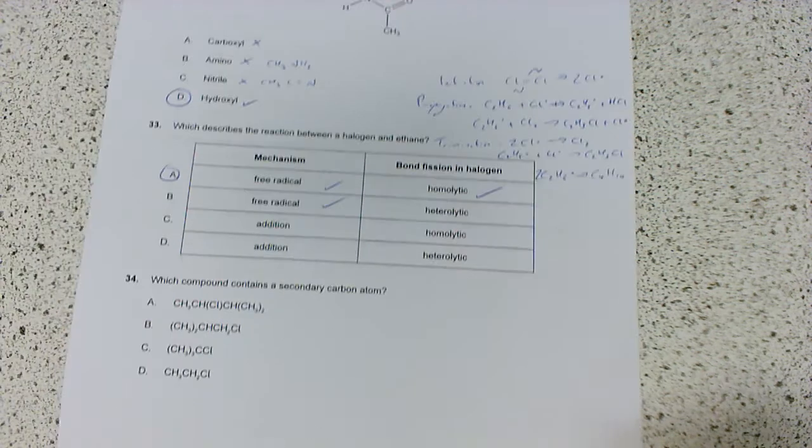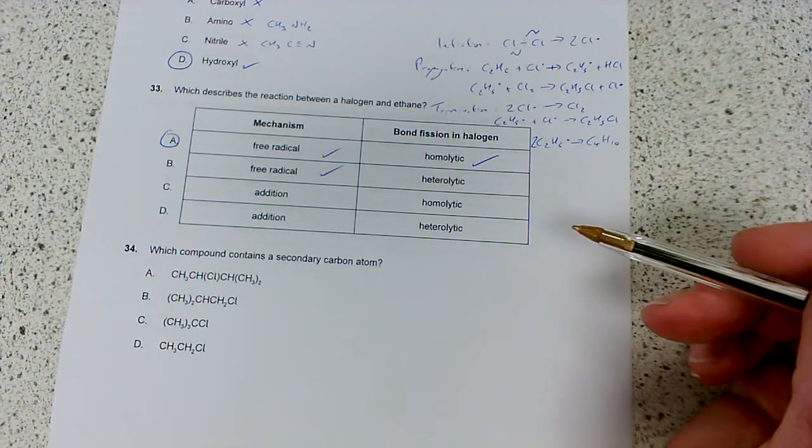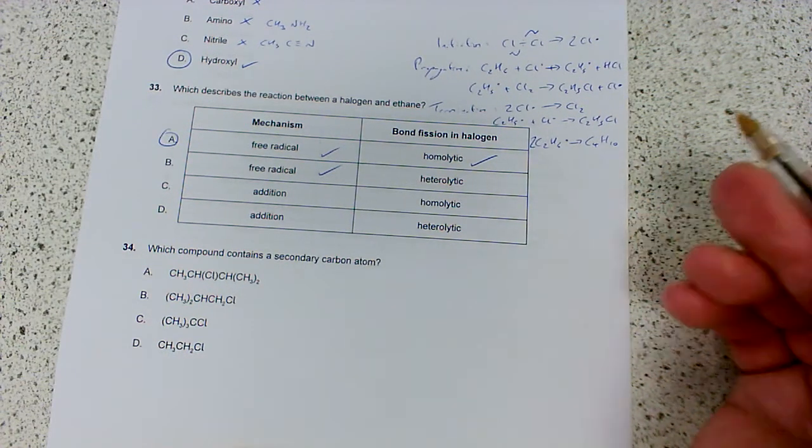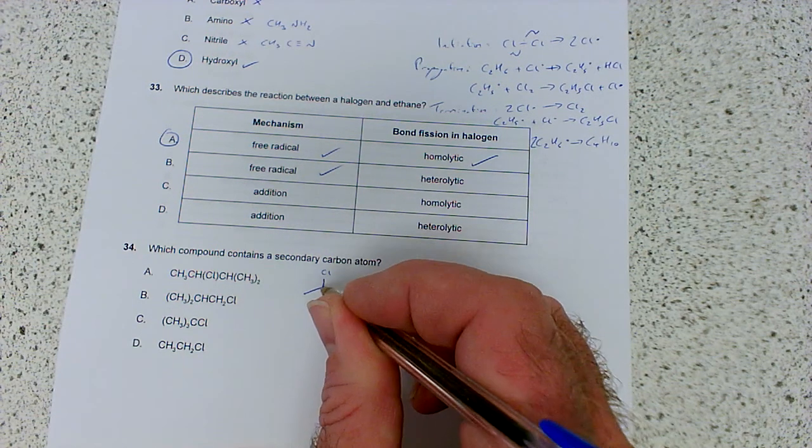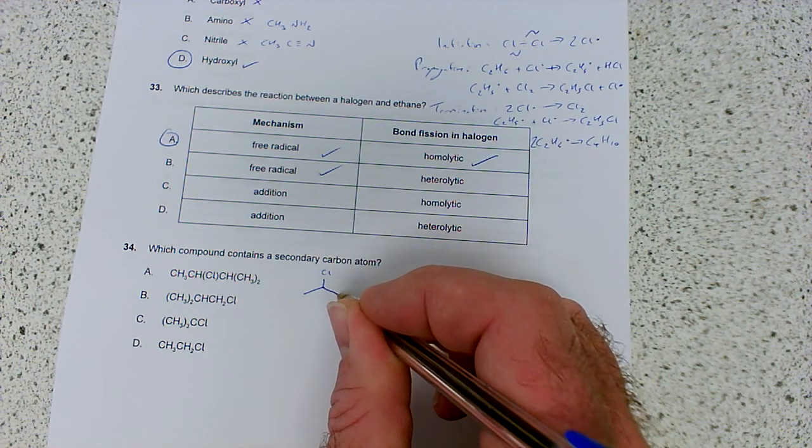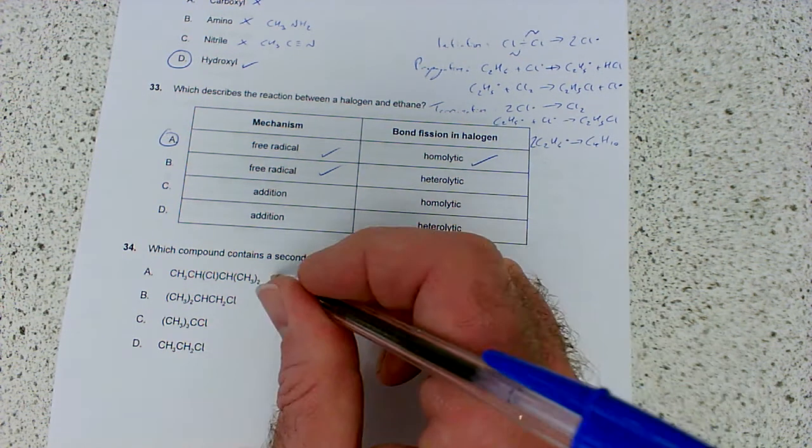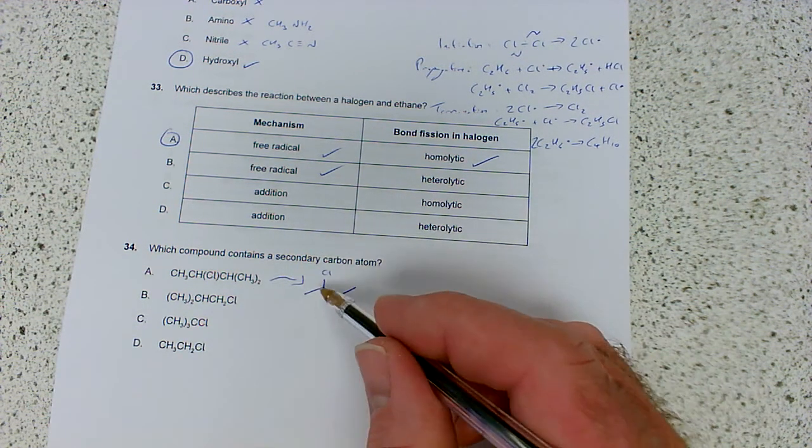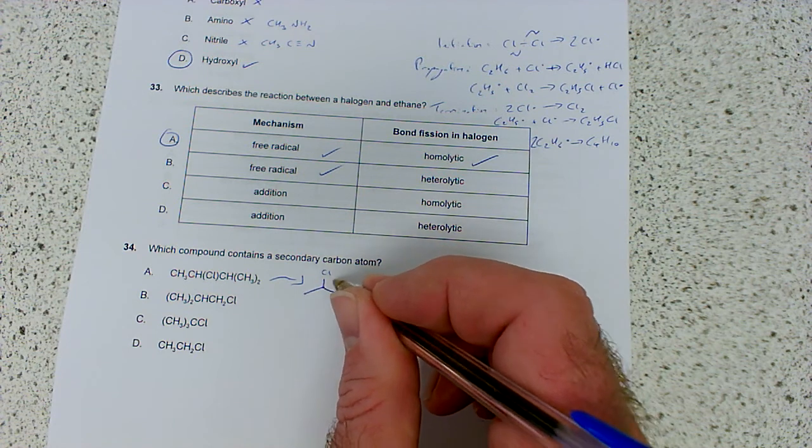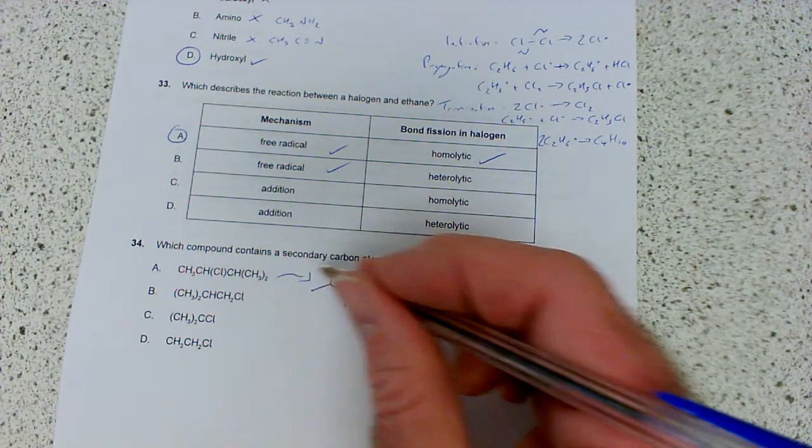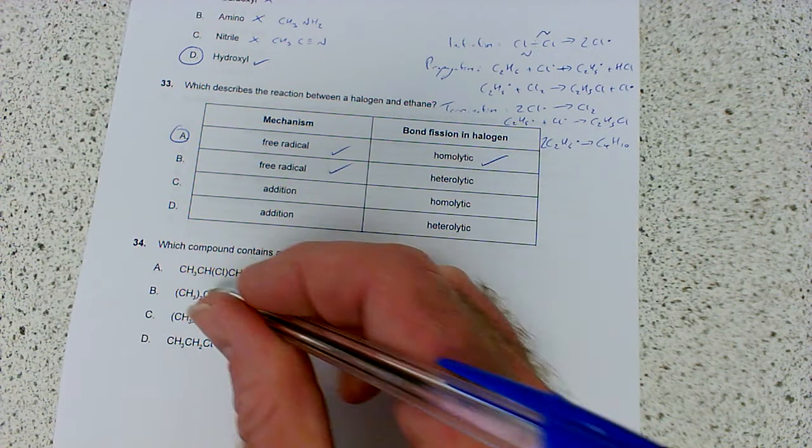Which compound contains a secondary carbon atom? Drawing out the skeletal structures helps. The first one has CH3, then CH with chlorine, then CH with two CH3 groups. That looks good - the carbon with chlorine is attached to two other carbons, so it's secondary.